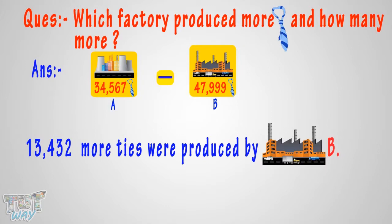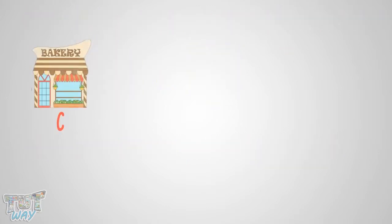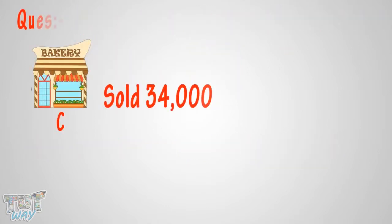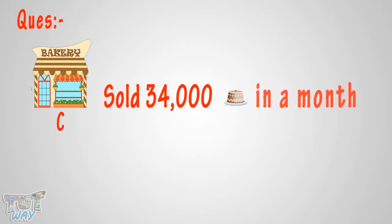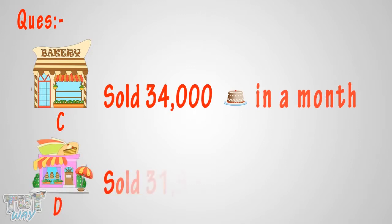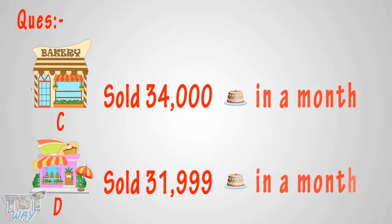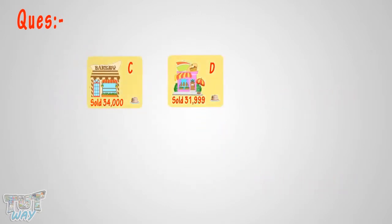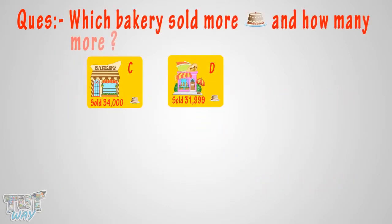Now let's take another example. Bakery C sold 34,000 pastries in a month and Bakery D sold 31,999 pastries in a month. Which bakery sold more pastries and how many more?